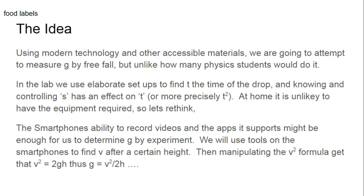We don't have access to the equipment needed to record time accurately at home, so I've decided to use something more powerful — something in our pockets. We're going to record the ball falling after a certain distance, measure its velocity at that point, and put that into the v² = u² + 2as formula, using a for g.